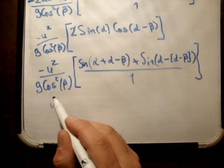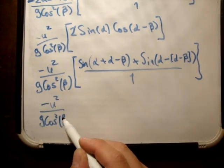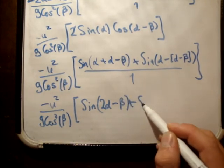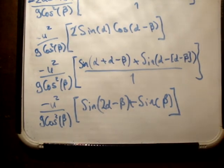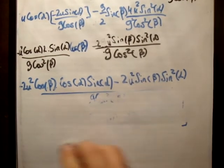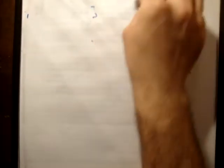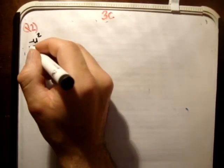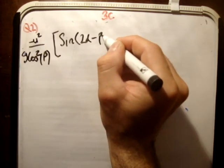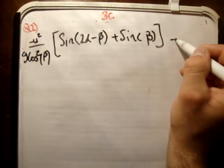So what we found is that S sub x equals minus u² over g cos² beta times (sin(2 alpha minus beta) plus sin beta). That's the expression for the range.